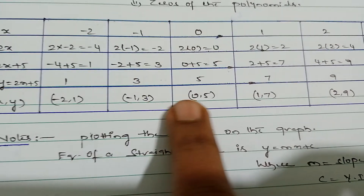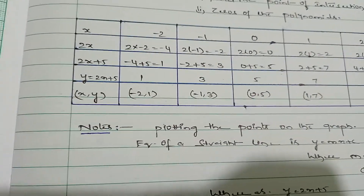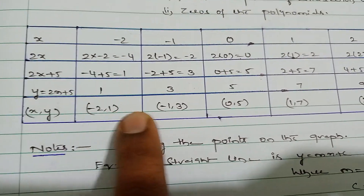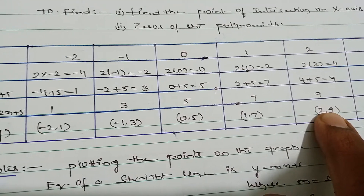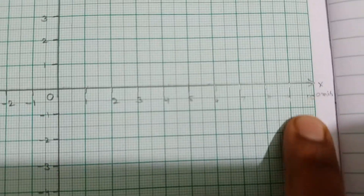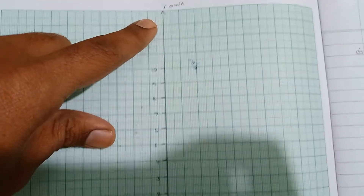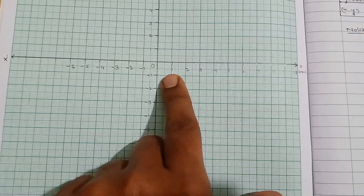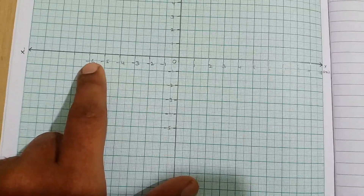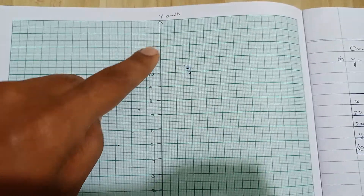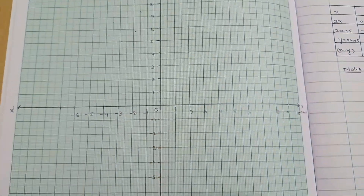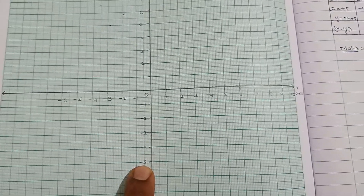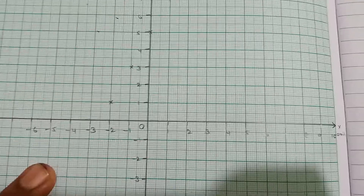The highest x value is 2, so take x-axis up to 3 or 5. The highest y value is 9, so take y-axis up to 10. On the graph, the horizontal axis is the x-axis and the vertical axis is the y-axis. I have taken x-axis values up to 9 positive and −6 negative, and y-axis up to 10 positive.